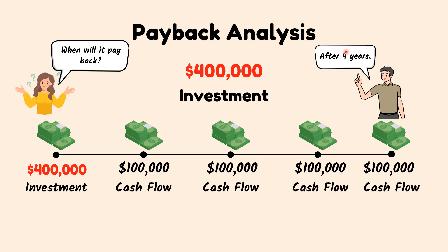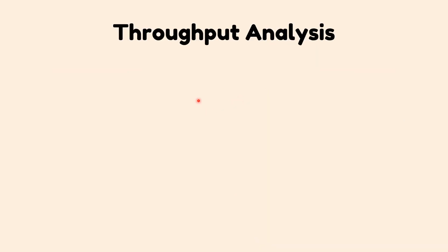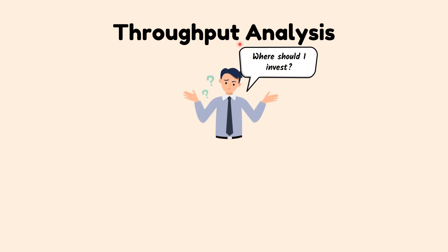However, there are some limitations to the payback method since it doesn't account for the opportunity cost or the rate of return that could be earned had they not chosen to pursue the project. Throughput Analysis is the most complicated form of capital budgeting analysis, but also the most accurate in helping managers decide which projects to pursue.